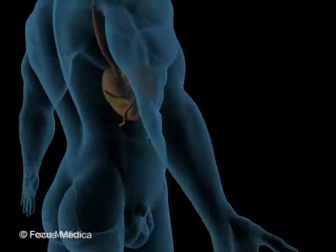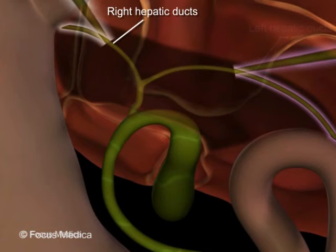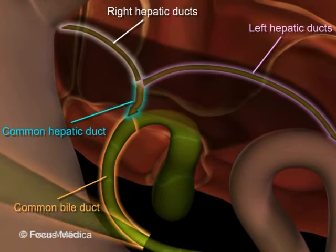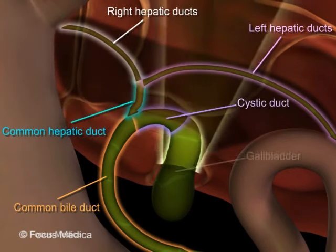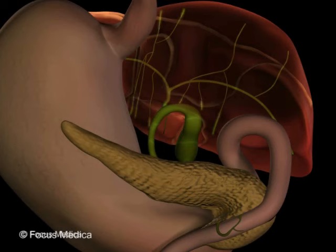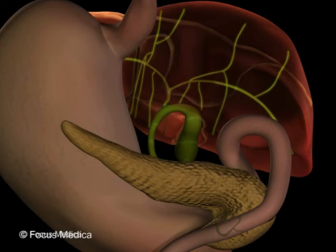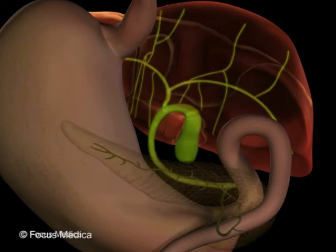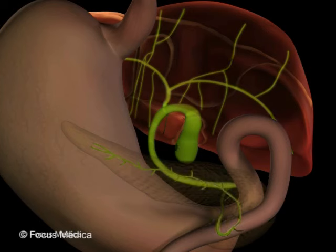The extra-hepatic biliary apparatus consists of the right and left hepatic ducts, common hepatic duct, common bile duct, cystic duct, and the gallbladder. Bile produced by the liver is carried via a system of ducts which successively join one another to form larger ducts, ending in the right and left hepatic ducts which emerge from the liver. These join to form the common hepatic duct, and the cystic duct joins it to form the common bile duct, which runs to join the pancreatic duct, forming the hepato-pancreatic ampulla of Vater.